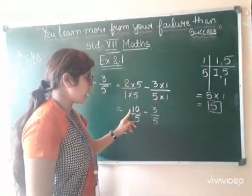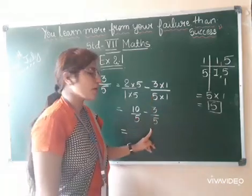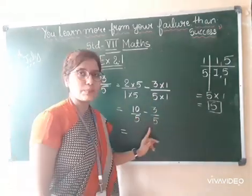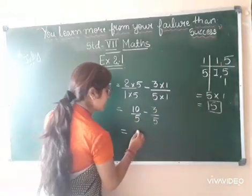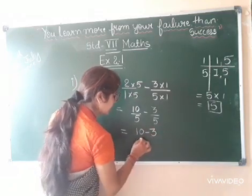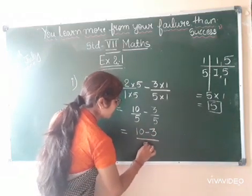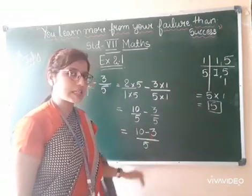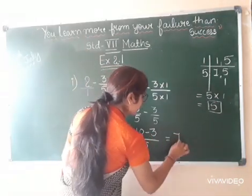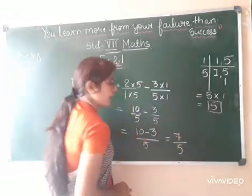So 2 fives are 10 upon 5, and here 3 ones are 3 upon 5. Now you can see the denominators are same. That means 10 minus 3 upon 5. Now you subtract: 10 minus 3 is 7. That means you will get 7 upon 5.